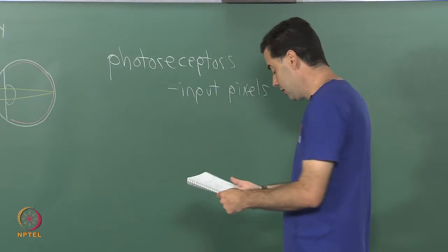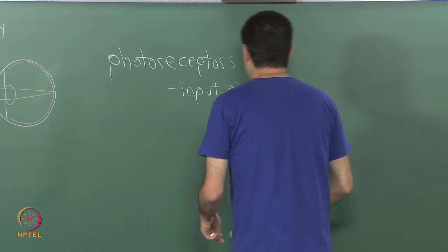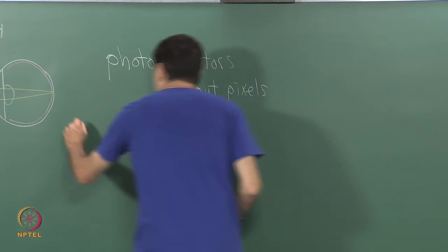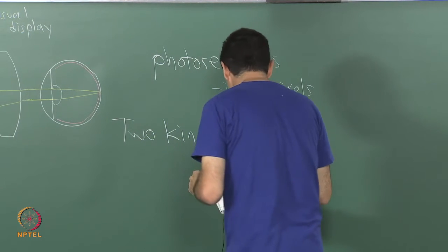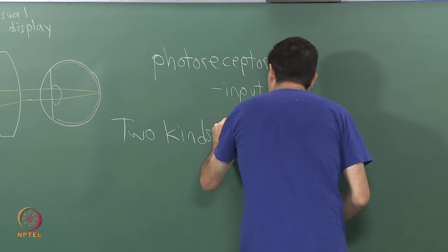There are two kinds of photoreceptors you may have seen this before: rods and cones.